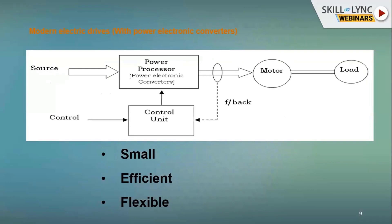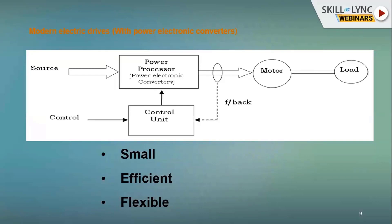With the advent of power electronics, we can now use modern electric drives. Power conversion is possible with a power processor or power electronic converter, making the system small, efficient, and flexible. This is a closed-loop control scheme, and the control unit can use PI, PID, or PD controllers designed with a microcontroller, digital signal processor, FPGA, or PLCs.